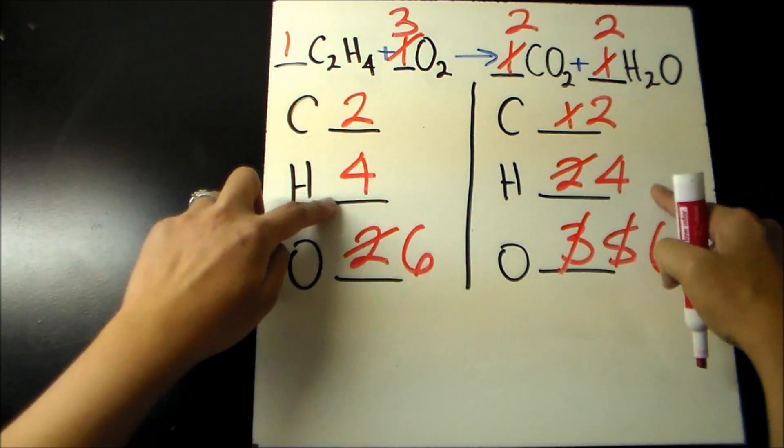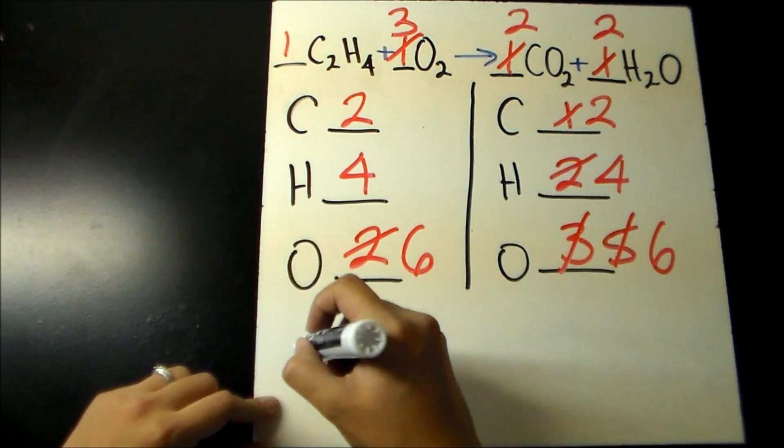On both sides, we now have 2 carbons, 4 hydrogens, and 6 oxygens, meaning our reaction equation is now balanced.